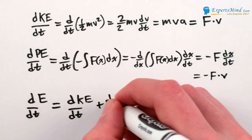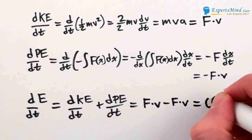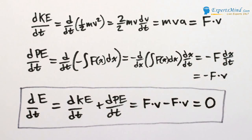And so the time derivative of the total energy, dE dt, is F times V minus F times V, or zero, which means energy doesn't change over time.